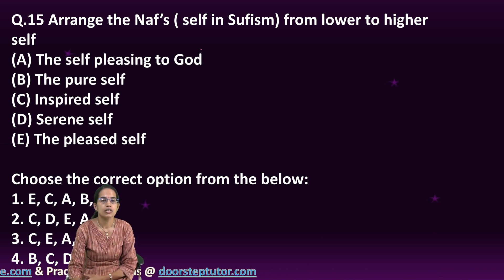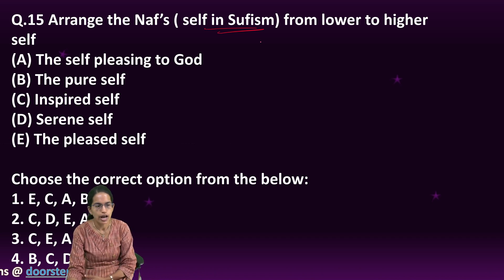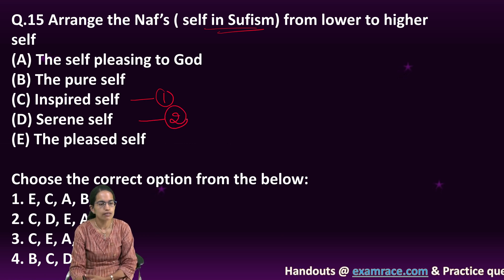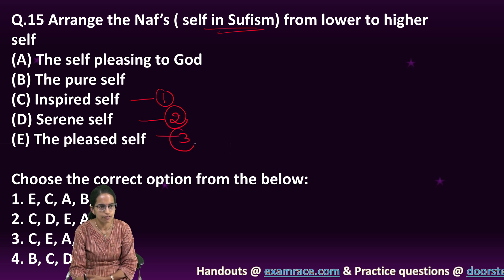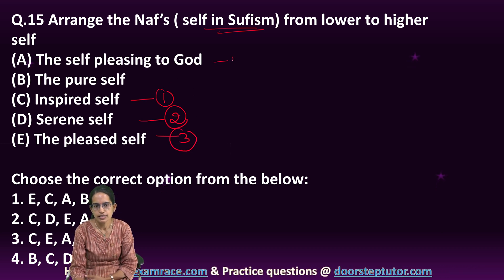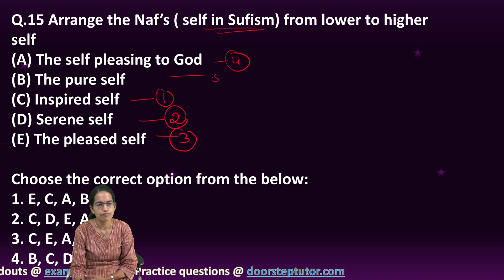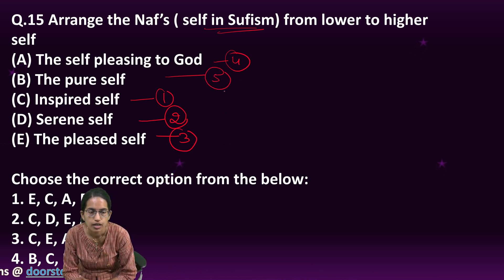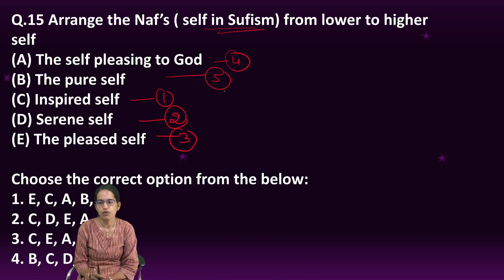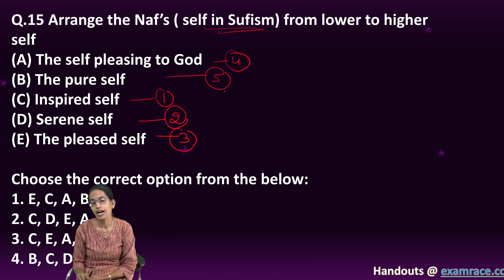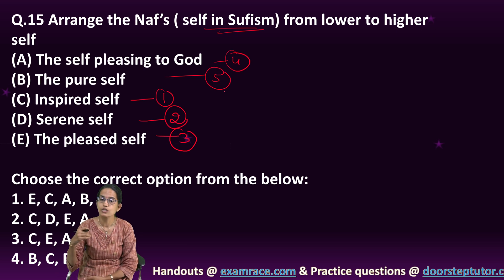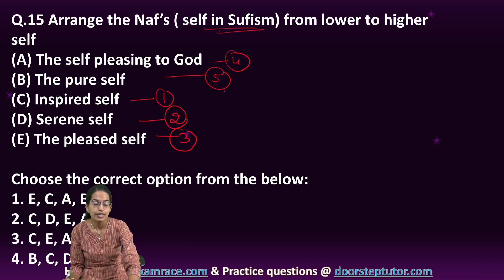Nafs means 'self' in Sufism. From lower to higher order, the correct sequence is: inspired self, serene self, pleased self, self pleasing to God, and finally the pure self. The pure self is the highest order of consciousness, where one is completely surrendered to the wishes of God.